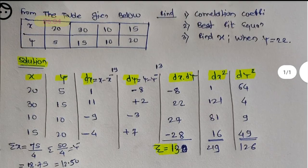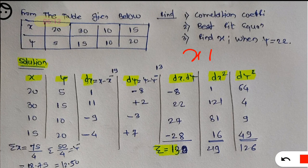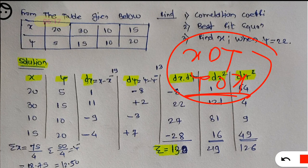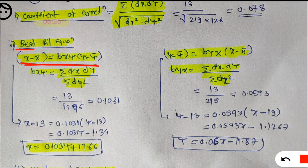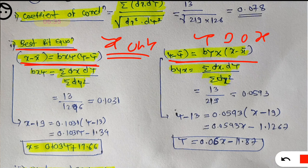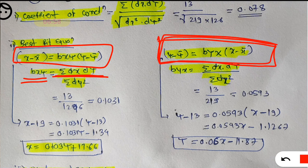Next, they are asking for the best fit line equation. Since they have not stated whether x depends on y or y depends on x, we will calculate both. When x depends on y: x minus x̄ equals b(xy) into (y minus ȳ), where b(xy) equals summation of dx·dy divided by summation of dy square. When y depends on x: y minus ȳ equals b(yx) into (x minus x̄), where b(yx) equals summation of dx·dy divided by summation of dx square.